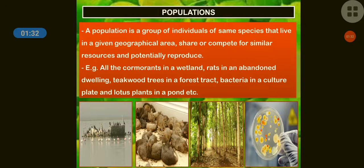Examples of populations: all the cormorants in wetlands, rats, teak trees in a forest, bacteria in a culture plate, and lotus plants in a pond.